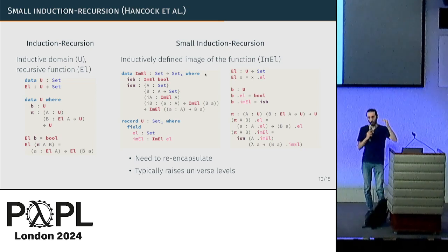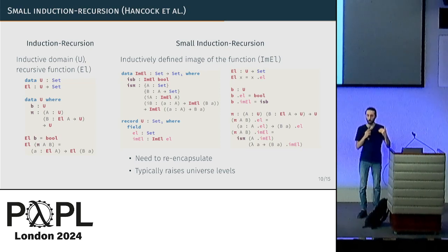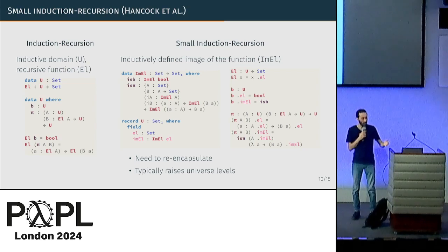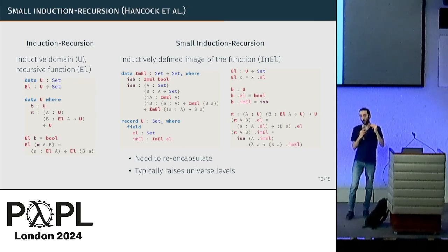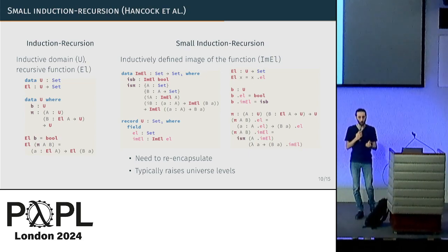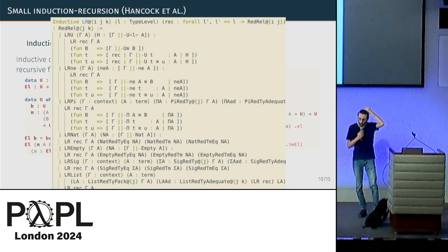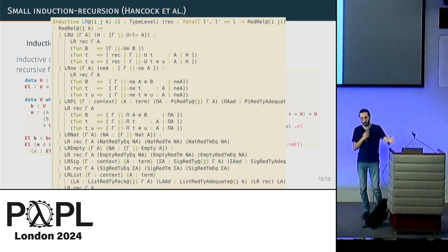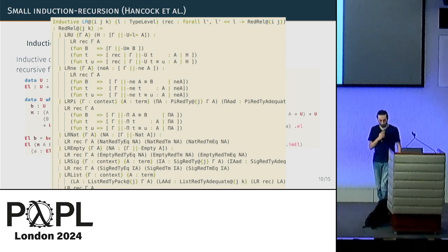One thing to note is that this typically raises the universe level — in Agda terms, moving from Set to Set₁. This is unsurprising because induction-recursion has very strong logical power, and universes are a way of obtaining that power. So instead of having this completely new principle, you encode it away and reduce the logical power to just having one or a few extra universes and indexed inductive types — very standard features of your proof assistant. From a logical point of view, this also reduces the meta-theory's logical power to be very close to that of the object theory, which is quite satisfying.